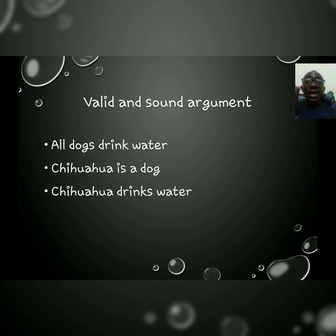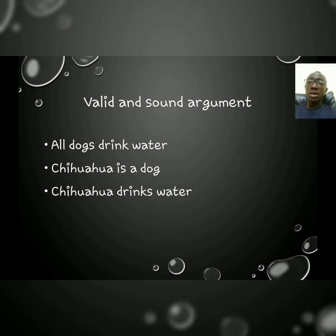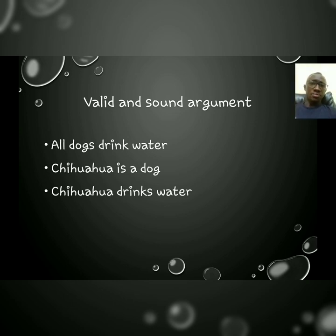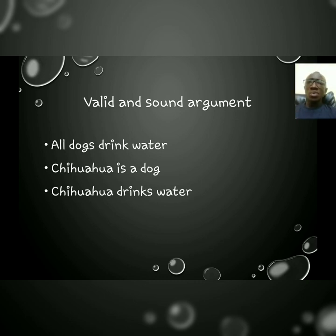Now, let's look at a valid argument that is also sound. 'All dogs drink water. Chihuahua is a dog. Therefore, Chihuahua drinks water.' It is valid because there is a logical flow — the conclusion follows from the premises. At the same time, the premises are true. All dogs do drink water, and a Chihuahua is a type of dog. So, the moment all the premises of a valid argument are true, we get a sound argument.